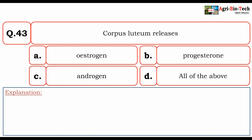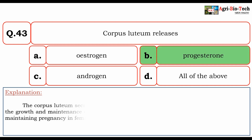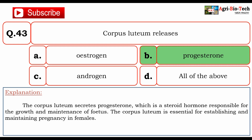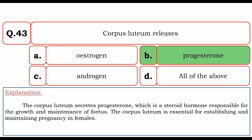Next question: corpus luteum releases — A) estrogen, B) progesterone, C) androgen, or D) all of the above. The correct option is B) progesterone. The corpus luteum secretes progesterone, which is a steroid hormone responsible for the growth and maintenance of the fetus. The corpus luteum is essential for establishing and maintaining pregnancy in females.